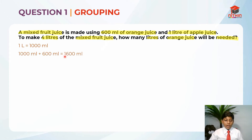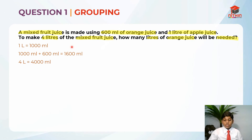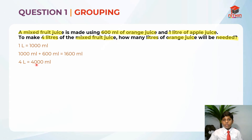Now, in order to find how many ml it takes to make 1 mixed fruit juice, it is 1600 ml. So this is the amount it takes. Now we convert 4 liters into ml, because since we know that 1 mixed fruit juice is 1600 ml, we can find 4 liters of mixed fruit juice. So 4 liters is equal to 4000 ml — same thing, just times 1000.